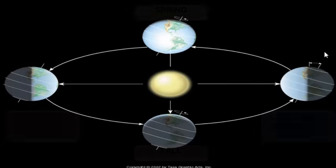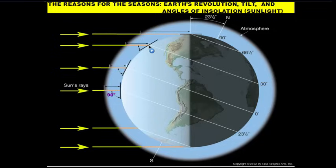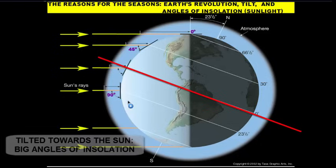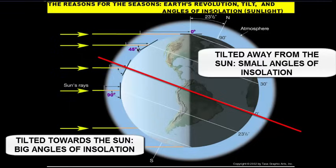Let's talk about how the tilt and revolution actually affect the angles of insolation — the angle at which sunlight hits the Earth. A Sun ray hitting the Earth straight on hits at a 90 degree angle. As we move up, that angle decreases. At 30 degrees north latitude the angle is roughly 45 degrees. Moving further up, there is actually no angle of insolation because the sunlight goes right over the top. The more tilted towards the Sun, the higher the angle of insolation; the more tilted away, the lower.